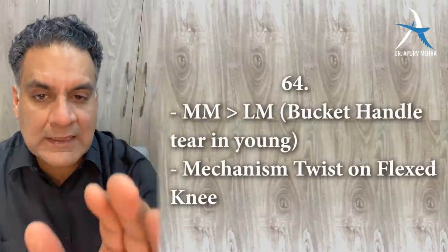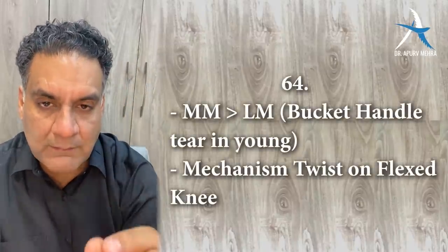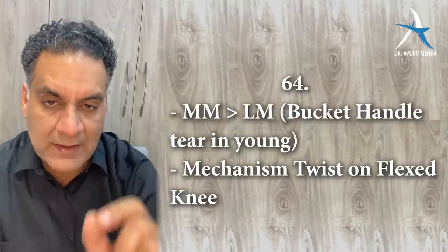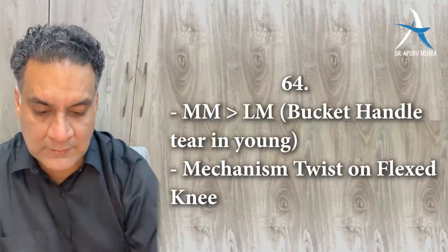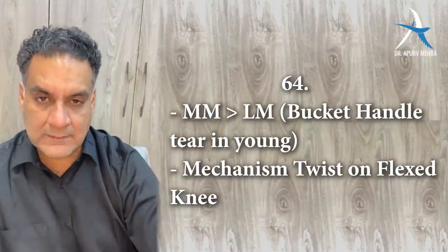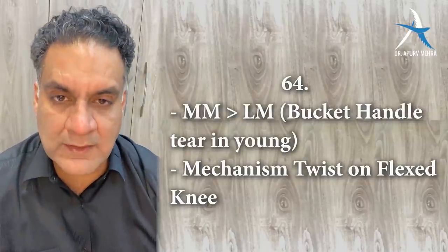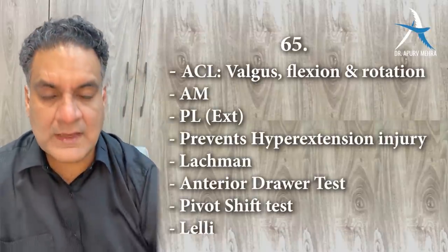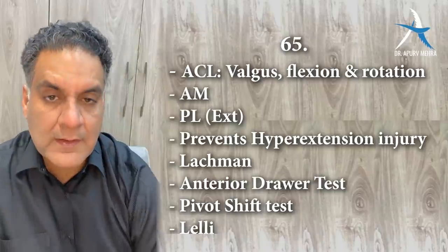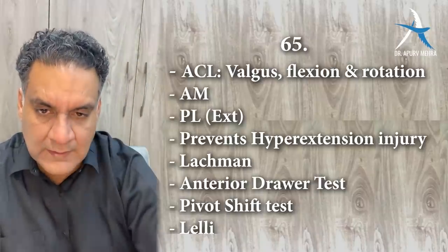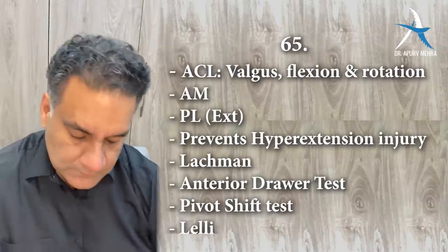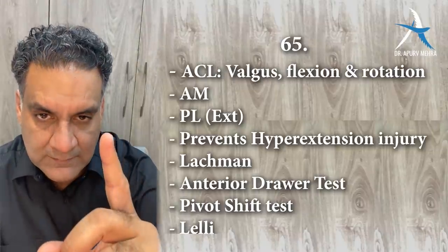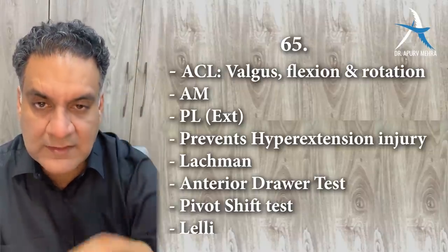Point number sixty-four: in knee rotational injuries, the medial meniscus is more commonly damaged than the lateral meniscus. The mechanism is a twist on a flexed knee. The bucket handle tear — a longitudinal vertical tear — is the most common tear in the meniscus. ACL is damaged with a valgus force on a flexed knee with rotation. ACL has two fiber bundles: anteromedial and posterolateral. The posterolateral fibers work in extension. Tests for ACL: Lachman test, anterior drawer test, pivot shift test, Lely test.